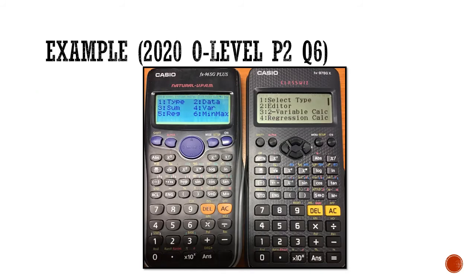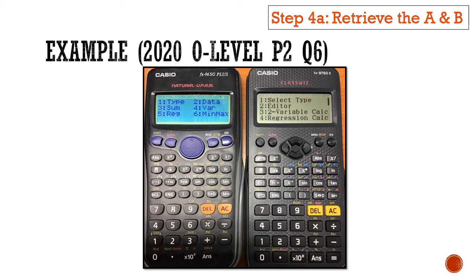Last but not least, all that remains is to retrieve the values of the y-intercept A and the gradient B. So let's begin with the 96SG Plus. You first have to press all clear, but don't worry, your data hasn't really disappeared. Then you've got to click on shift 1, followed by choosing the regression option, which is number 5.